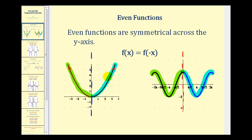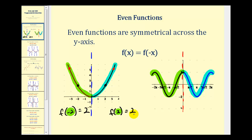More specifically, if we take a look at this function here, f of two is equal to two. If we change the sign of the x-coordinate — let's say we want f of negative two — notice that f of negative two is also equal to positive two. So if the function is even, if we change the sign of the x-coordinate, the y-coordinate or the function value remains the same. To generalize this, we say f of x is equal to f of negative x, if the function is even.